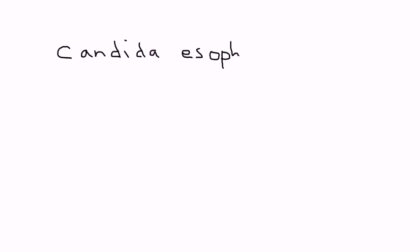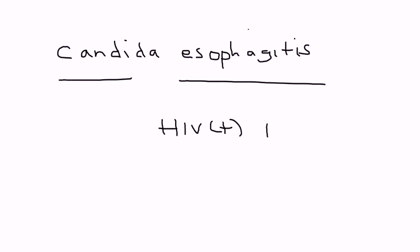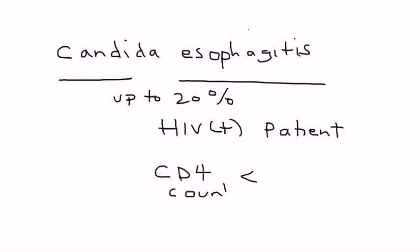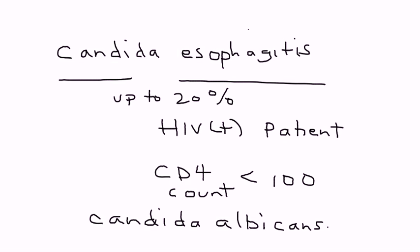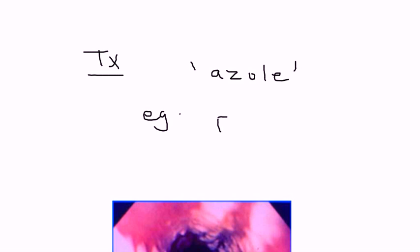I wanted to now touch base briefly about candida esophagitis. Most clinical vignettes on the licensing exams will talk about candida esophagitis in the context of an HIV-positive patient, because up to 20% of patients with HIV can have candida esophagitis, in particular when their CD4 count drops below 100. The species' full name is Candida albicans. The EGD will show this classic white exudate. The treatment is any antifungal — any of the azole medications — and most commonly you're looking at fluconazole, and sometimes itraconazole.